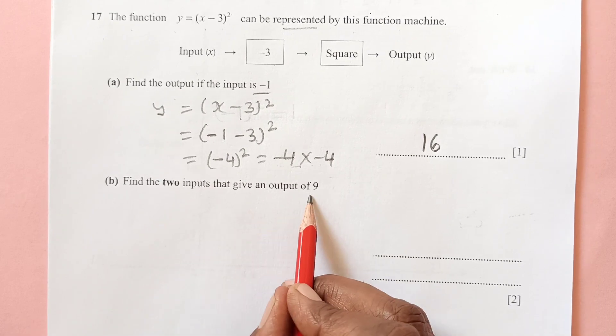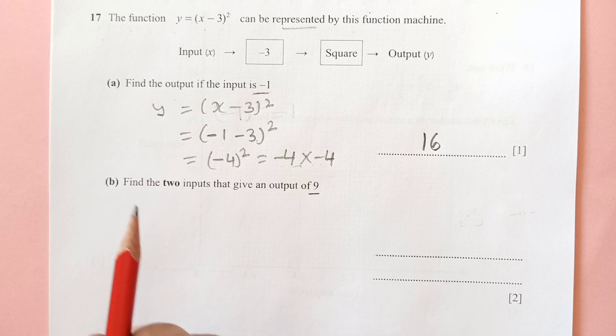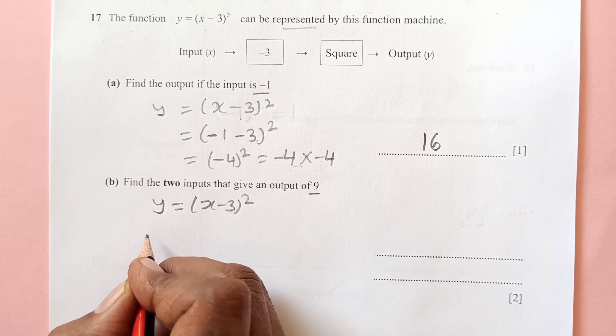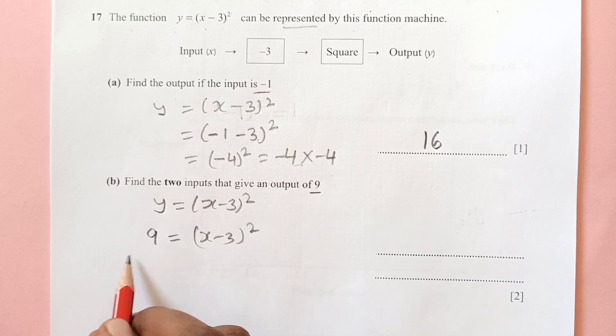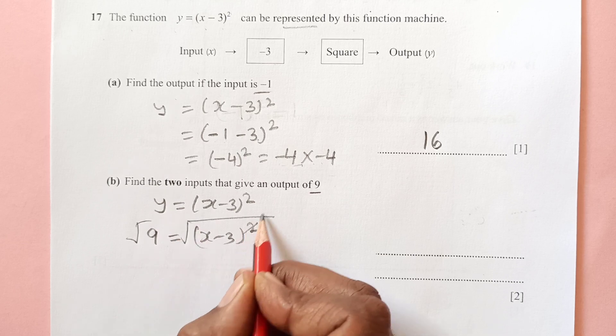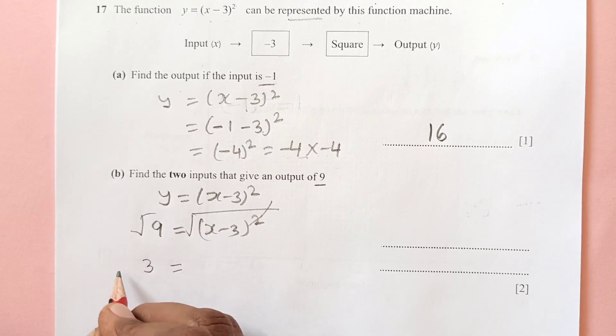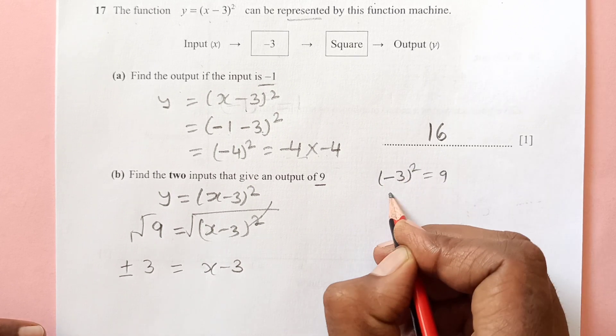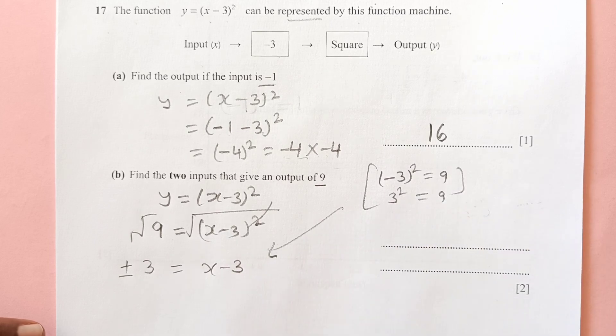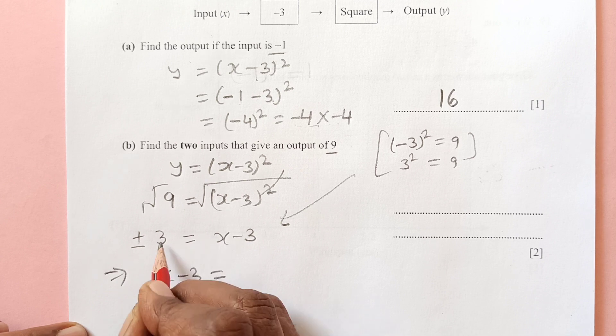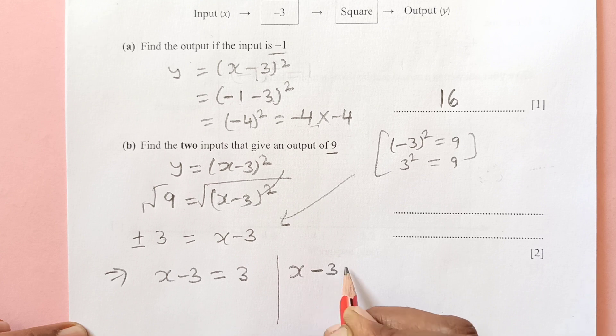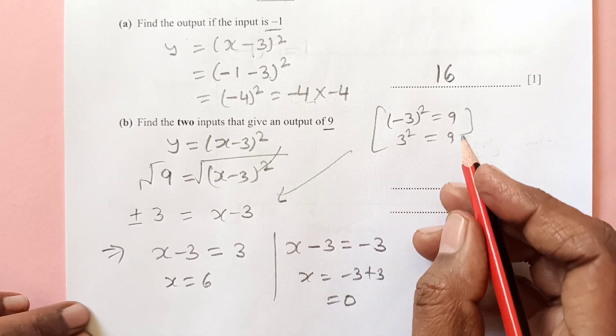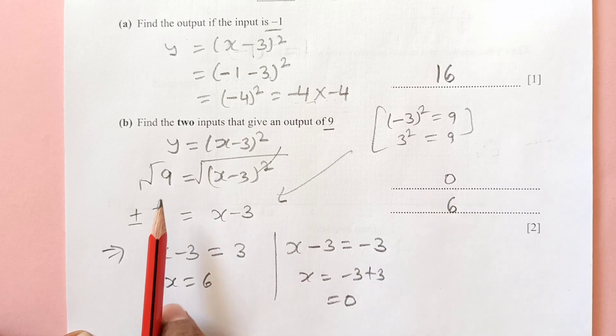Find the two inputs that give an output of 9. We have y equals x minus 3 power 2, and output is 9, so the answer is 9. So x minus 3 squared equals 9. Square root both sides. When you square root, this and this will cancel, so you have plus or minus 3 here. Why do we take minus 3? Because negative 3 squared is also 9 and 3 squared is also 9. So we have x minus 3 equals positive 3, and x minus 3 equals minus 3. So x equals 6 from here and x equals 0. We have answer 0 and 6 that gives us output 9.